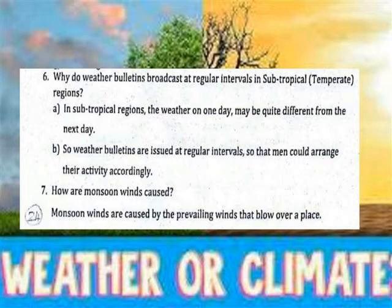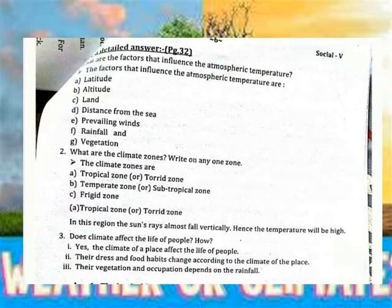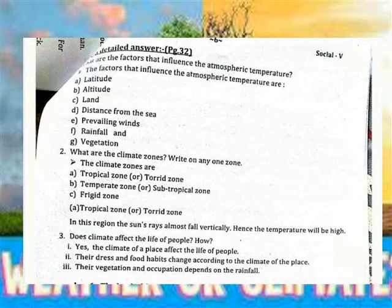How are monsoon winds caused? Monsoon winds are caused by the prevailing winds that blow over a large area. What are the factors that affect the atmospheric temperature? The factors are: latitude, altitude, land, distance from the sea, prevailing wind, rainfall, and cloud cover. What are the climate zones? The climate zones are: tropical zones, temperate zones or subtropical zones, and polar or frigid zones. In tropical zones, the sun's rays always fall vertically, hence the temperature will be high. Does climate affect the life of people? Yes, the climate of a place affects the life of people. Their dress and food habits change according to the climate of the place. Their occupation also depends on the climate.